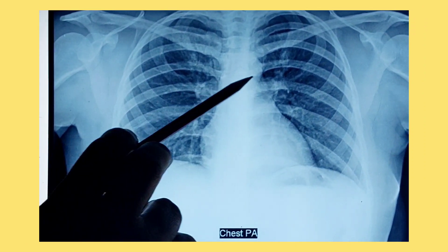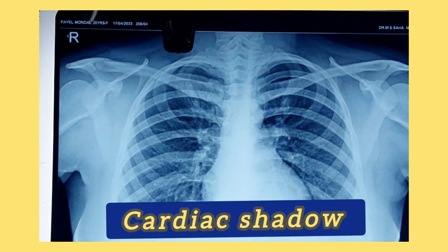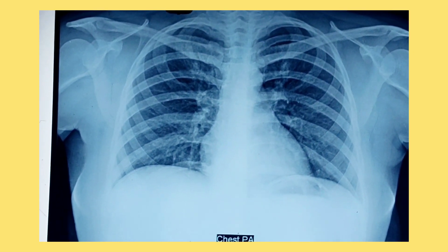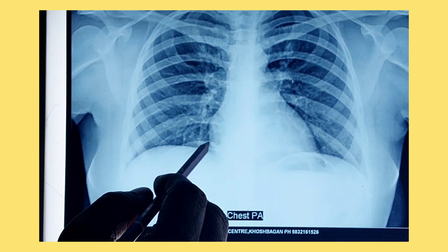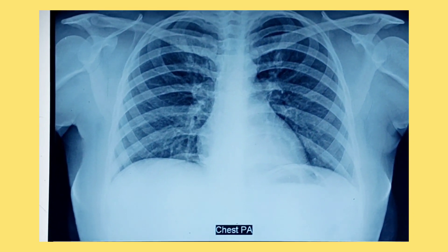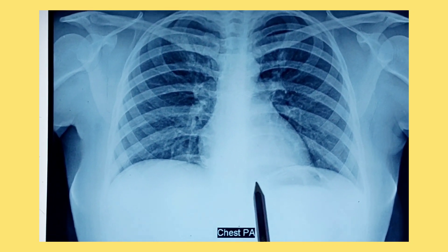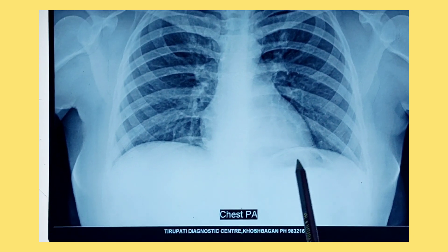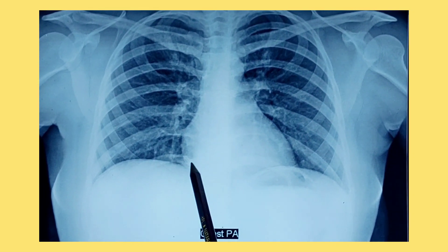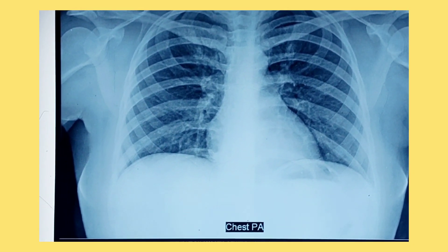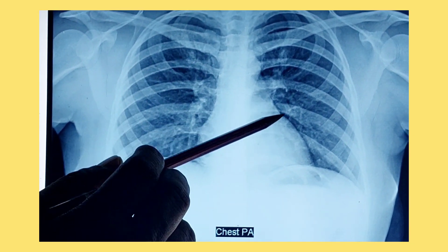In these radiopaque areas, the cardiac shadow is mainly assessed. You may be asked to show the right border of the heart — this is the right border, which is formed by the right atrium. You may be asked to show the inferior border — this is the inferior border, but you cannot show it clearly because it is obscured by the diaphragm shadow. The inferior border is formed by the right ventricle. The left border, which is formed by the left ventricle, is clearly visible.